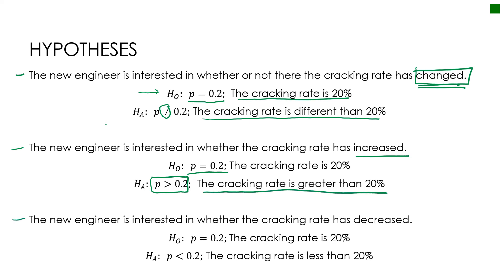Last one: if the new engineer is interested in whether the cracking rate has decreased, then I'm going to use a null hypothesis of equals 0.2 because the null is always that nothing has changed. But my alternative is going to be less than, because I'm seeing if it has decreased from the 20% we assume is true.